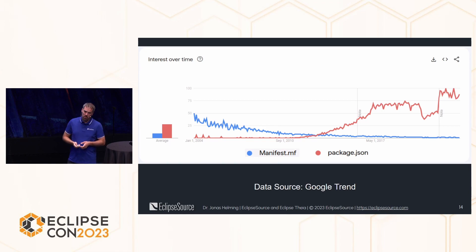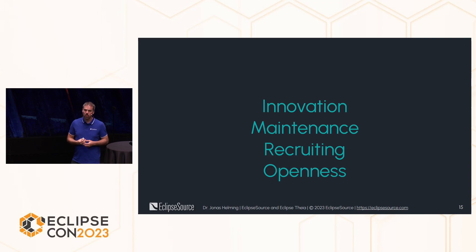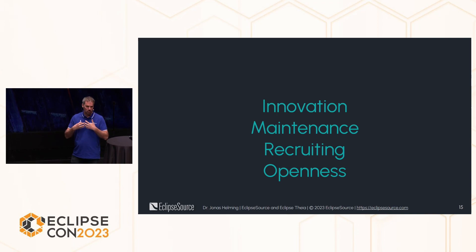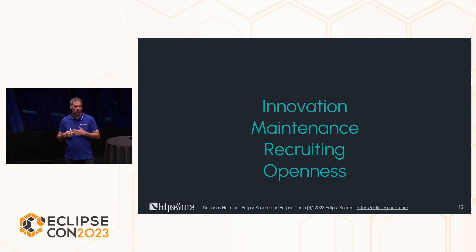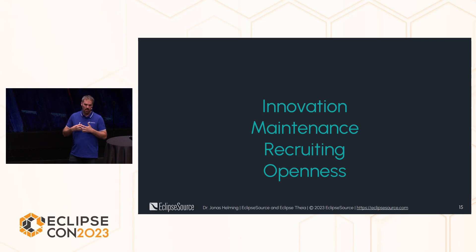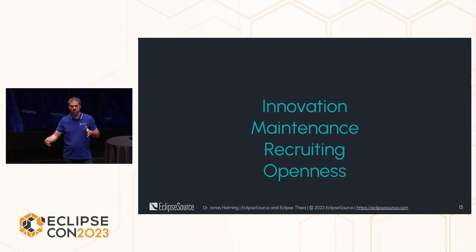Why do we want to build on mainstream technologies? Just to mention a few reasons: the more people use technologies, the more contributors there are, the more innovation happens, and communities are bigger. The more adopters there are, the easier maintenance becomes because there are more players potentially contributing bug fixes. Recruiting gets easier — university graduates today know JavaScript, HTML, and related technologies but would need to be taught SWT. And openness: you can more easily integrate with other technologies if you're on the same stack. That's why I placed this at number one in accomplishments.